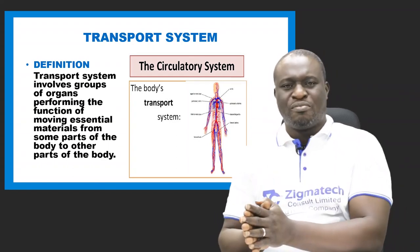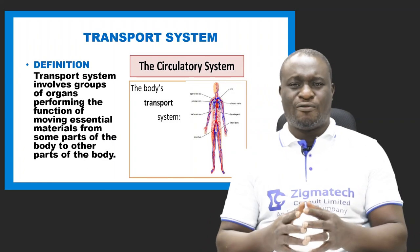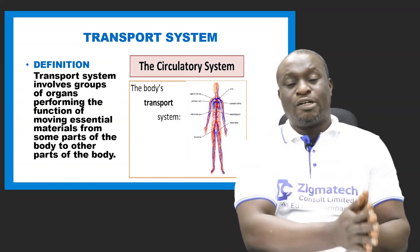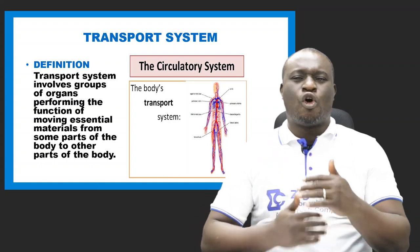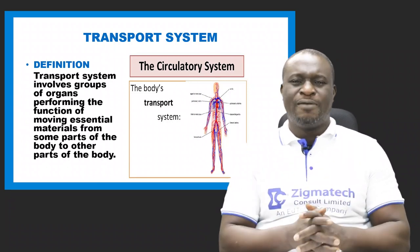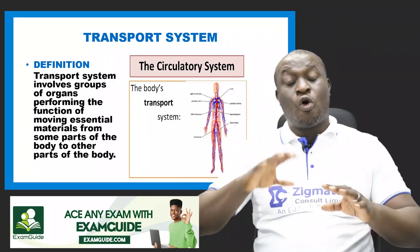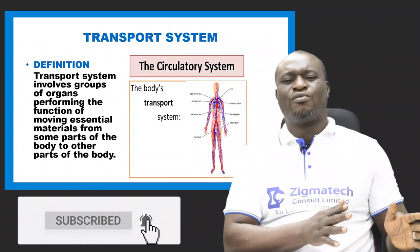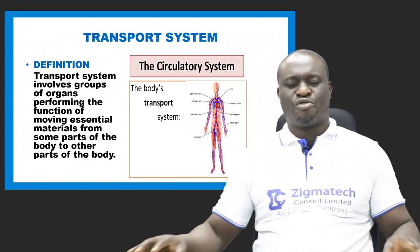If we include the term transport system, remember that systems are groups of similar organs which carry out a particular function. So transport system can be defined as a system that involves groups of organs that perform the functions of moving essential materials from some part of the body to other parts of the body. This is the proper definition for transport system as it regards biology.